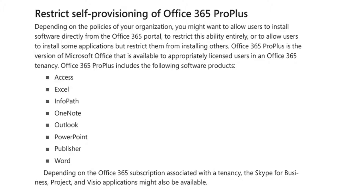OneNote, Outlook, PowerPoint, Publisher, Word, and, depending on the Office 365 subscription associated with a tenancy, Skype for Business, Project, and Visio applications might also be available. Visio and Project are normally available in an E5 subscription, and the above list of software is normally available on an E3 subscription.